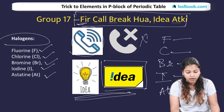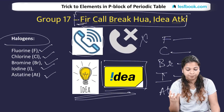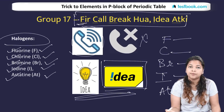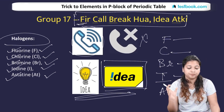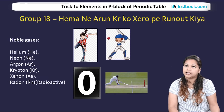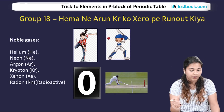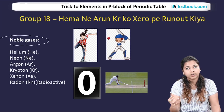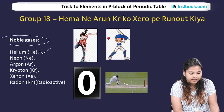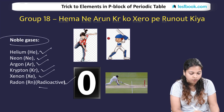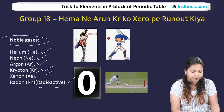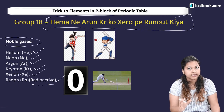Idea is for iodine and Acky is for astatine. So: Fill, Call Break, Idea, Acky. Now let's move to group 18. In group 18, the elements are noble gases, which are colorless and odorless. The elements are helium, neon, argon, krypton, xenon and radon. Radon is radioactive.